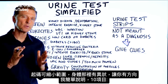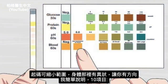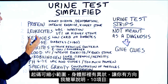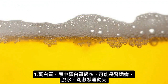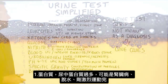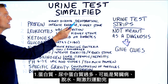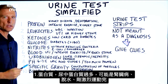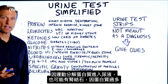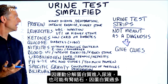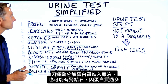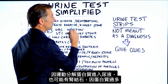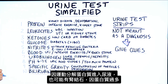I'm going to make this as simple as possible. Normally these strips have about 10 different things to look at. The first one is protein. If there's excess protein in the urine, potentially there could be kidney disease, dehydration, or you just worked out intensely — because when you exercise, that can break down certain proteins that end up in the urine. It could also be a kidney stone.